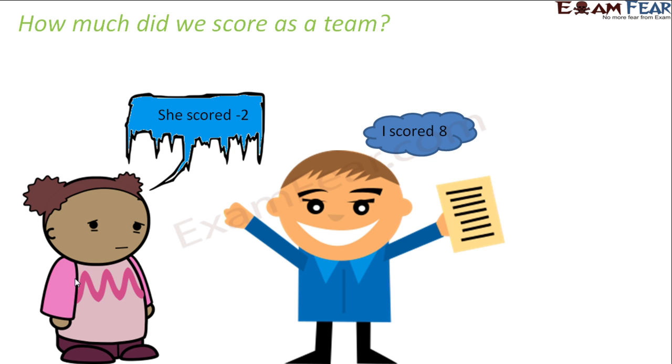So now they want to know how much did they score as a team. So together how much did they score? One of them scored 8, the other person scored minus 2. So basically what we need to do, we need to add the score of the first person with the score of the second person. So we basically need to add 8 and minus 2. So how do we add a positive integer with a negative integer? So that is our next assignment, that is what we need to learn now.